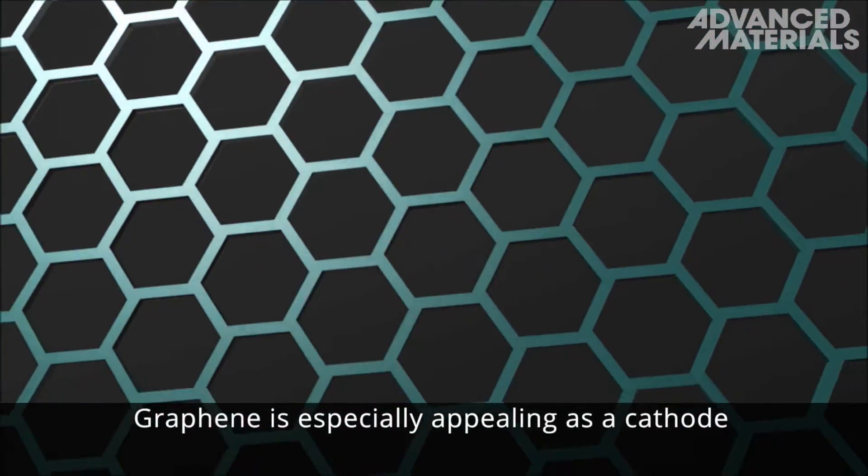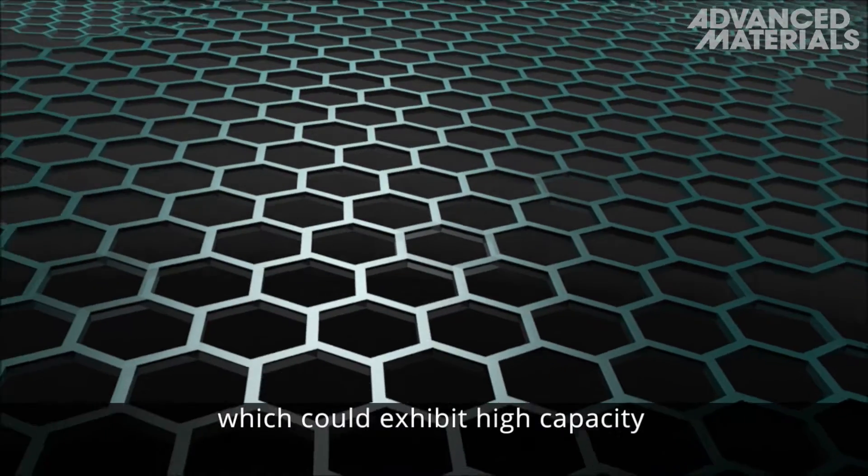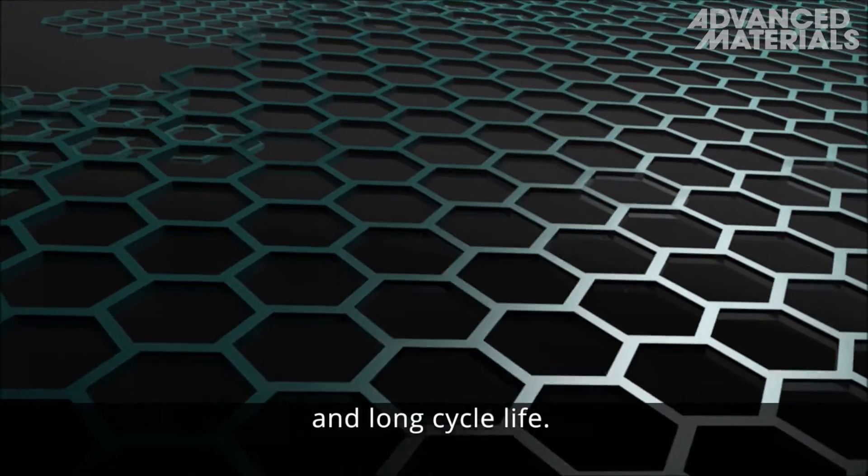Graphene is especially appealing as a cathode material for aluminum-ion batteries, which could exhibit high capacity and long cycle life.